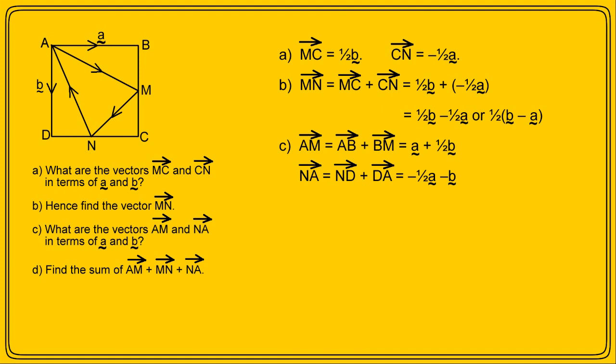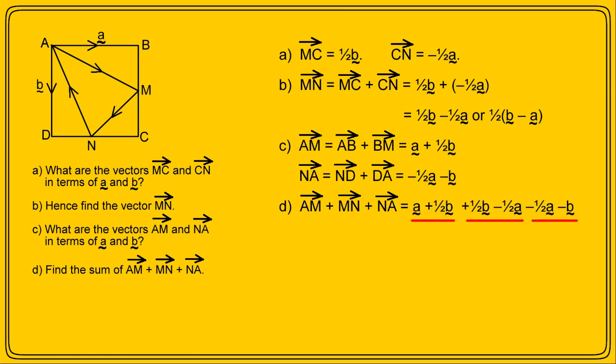And lastly, in part D, we need to find the value of vector AM plus vector MN plus vector NA. We now know what all these individual vectors are, so all we need to do is add them up. AM plus MN plus NA is a plus a half b, plus a half b minus a half a, minus a half a minus b. Using simple algebra, all the vector a's cancel and all the vector b's cancel too, leaving us with zero — which in vector speak is of course the null vector.